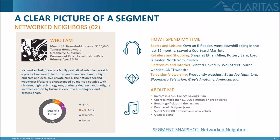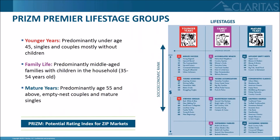Now that you have a better understanding of what an individual segment looks like, we're going to look at the life stage groups. Life stage groups are built off the 68 segments and roll up into 11 different groups. They are organized top to bottom based on socioeconomic rank, which takes into account characteristics such as income, education, occupation, and home value.